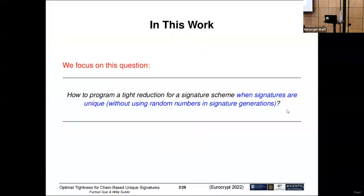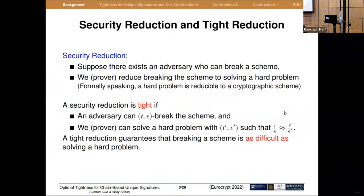In this work we focus on the question: how to program a tight reduction for a signature scheme when signatures are unique, meaning without using random numbers in signature generation. This is a popular method for security proof. A security reduction shows that an adversary who can break a scheme can be reduced to solving a hard problem. A tight reduction guarantees that breaking a scheme is as difficult as solving a hard problem.